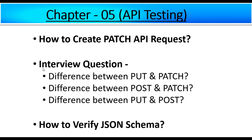In case of PATCH API request, it is also a technique for modifying the resource in the application server, but when the client sends partial data, only that partial data will be updated without replacing the whole data in the application server. PUT request consumes more bandwidth, but PATCH request consumes less bandwidth because in PUT we send the whole data, whereas in PATCH we send only a partial request body.